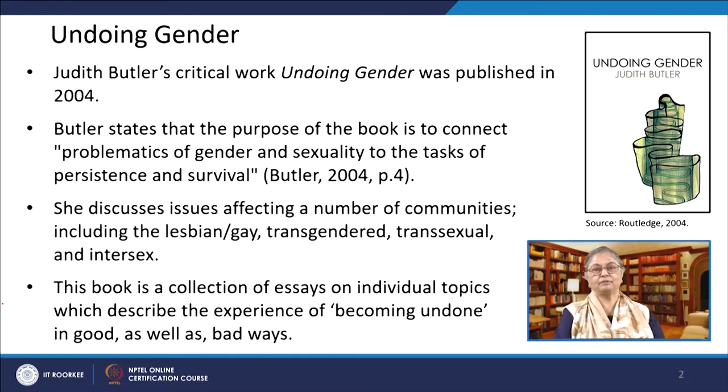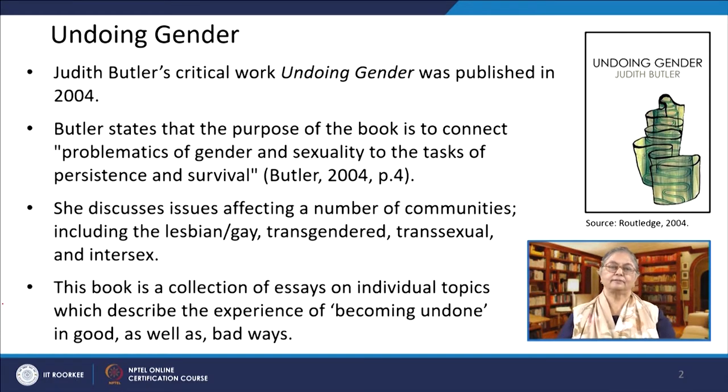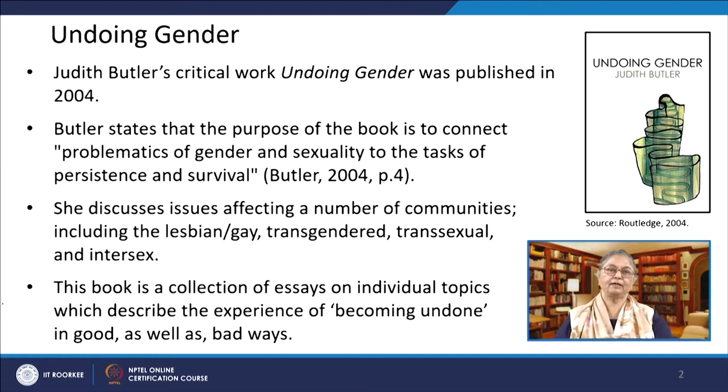She questions various assumptions prevalent in society regarding gender and scrutinizes how marginalized populations attempt to counter these norms. Butler states that the purpose of the book is to connect problematics of gender and sexuality to the tasks of persistence and survival. She has discussed issues affecting a number of communities including the lesbian, gay, transgender, transsexual and intersex. The book is a collection of essays on individual topics which describe the experience of becoming undone in good as well as in bad ways. The cover picture of Undoing Gender is inspired by Butler's finding that the progress towards gender equality has been a zigzag rather than a straight line.